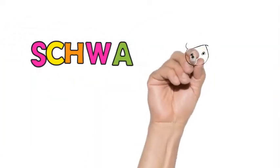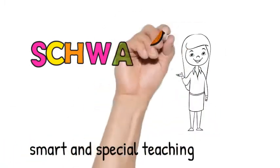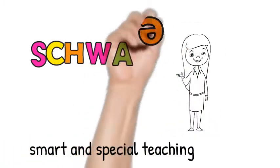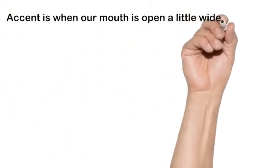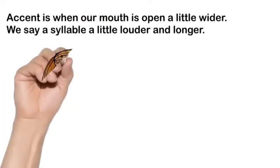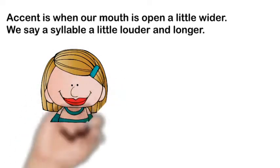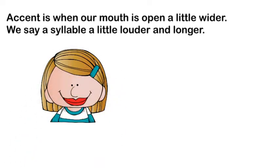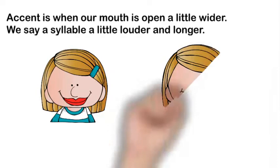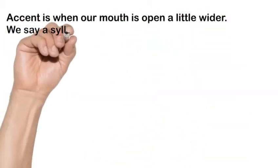Let's talk about the concept of schwa. What is a schwa? To understand schwa, you need to know about accent. Accent is when our mouth is open a little bit wider. We say a syllable a little bit louder and a little bit longer. So accent happens in the syllable that's louder and longer. In an unaccented syllable, the syllable is not as loud and not as long.